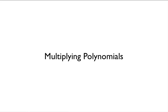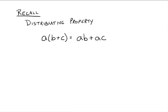In this video, we're going to discuss multiplying polynomials, and the key to multiplying polynomials is recalling the distributive property. The distributive property says if you have A times (B plus C) — one term times two or more terms inside the parentheses — then we literally distribute the A through. We get A times B, which gives you AB, plus A times C, which gives you AC. That's the distributive property, and that is the key property we're going to need when multiplying polynomials.